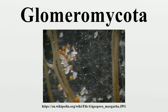The arbuscular mycorrhizal species are terrestrial and widely distributed in soils worldwide, where they form symbioses with the roots of the majority of plant species. They can also be found in wetlands, including salt marshes, and associated with epiphytic plants.